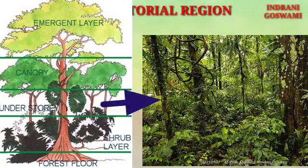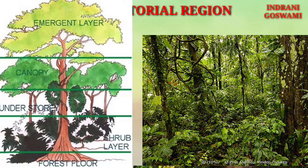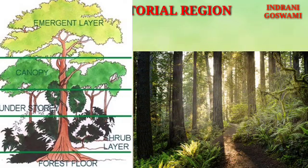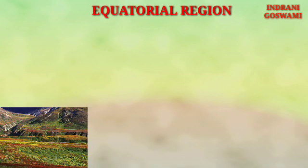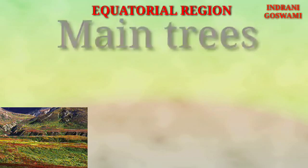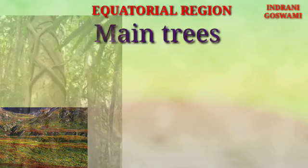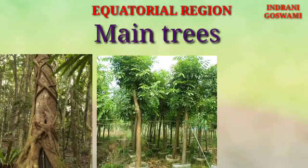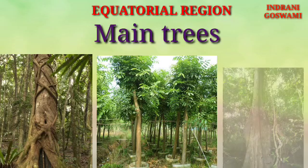Since light is blocked by the canopy, plants in the understory have longer or larger leaves to maximize light absorption. The bottommost layer is the forest floor, which has ferns and shrubs as well as some climbers. The main trees in this region include ebony, mahogany, green heart, rosewood, ironwood, and rubber.